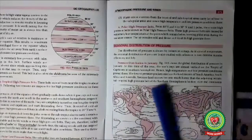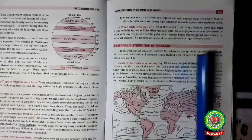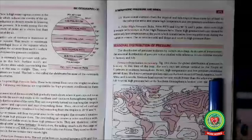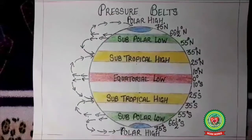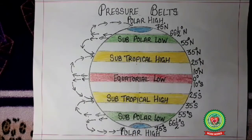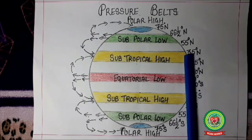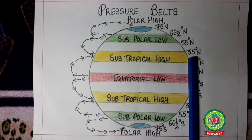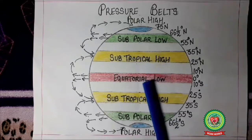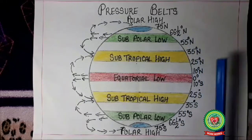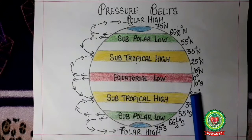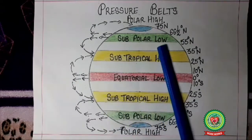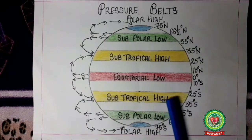The last topic for today is seasonal distribution of pressure. We will discuss seasonal distribution in summer and winter with the help of diagrams and isobars. Normally the pressure belts are as shown, but in June the sun migrates towards north and rays fall directly on the Tropic of Cancer — June is the summer month and hottest month for India — so all pressure belts shift towards north. In December and January the sun rays fall directly on the Tropic of Capricorn, so the highest temperature is along the Tropic of Capricorn, and all pressure belts shift towards south. This is called the shifting of pressure belts.